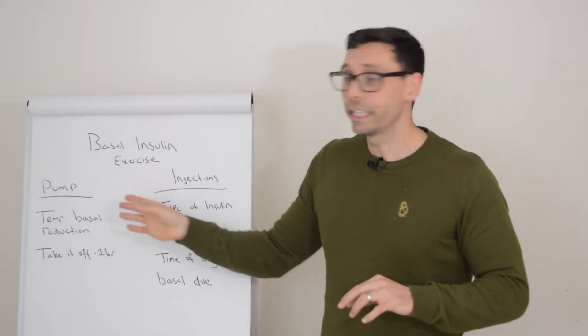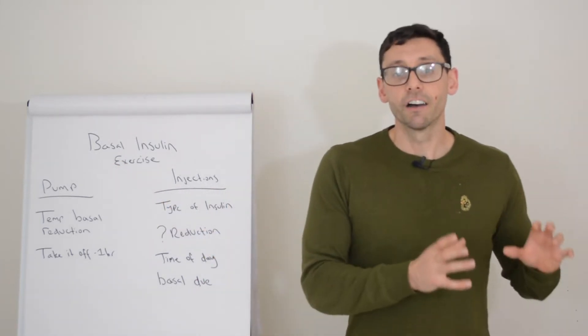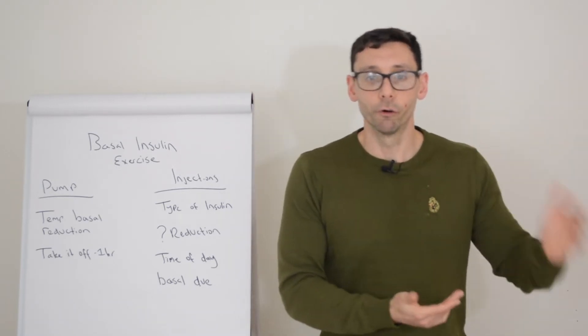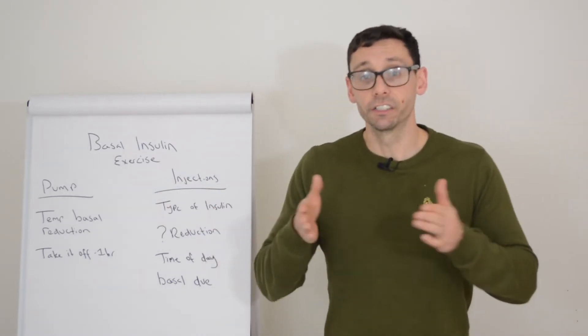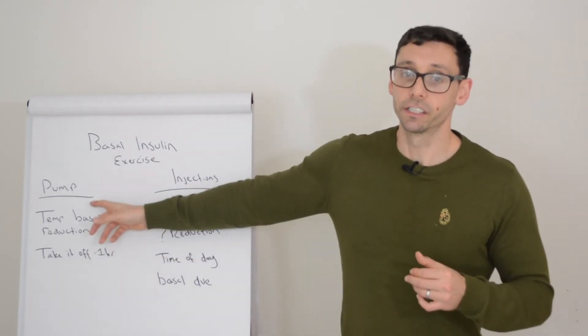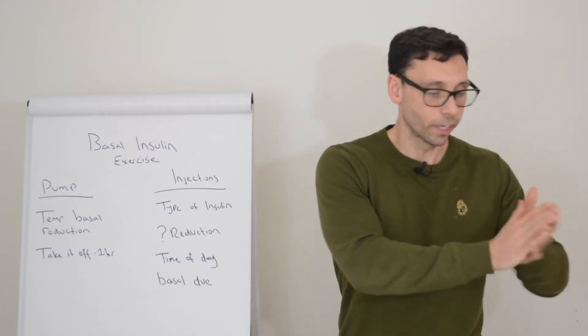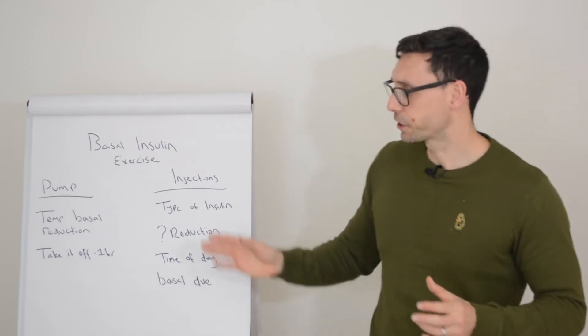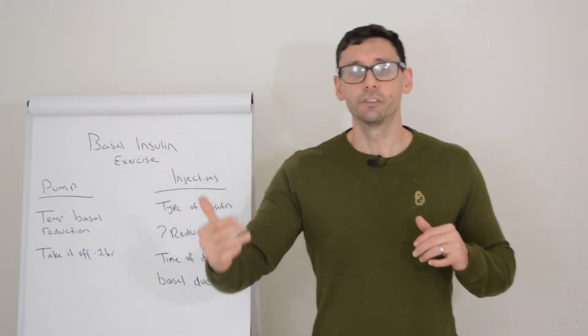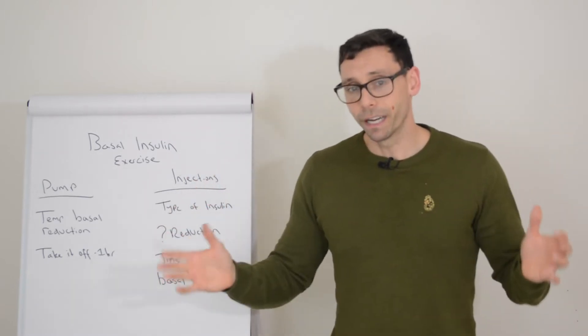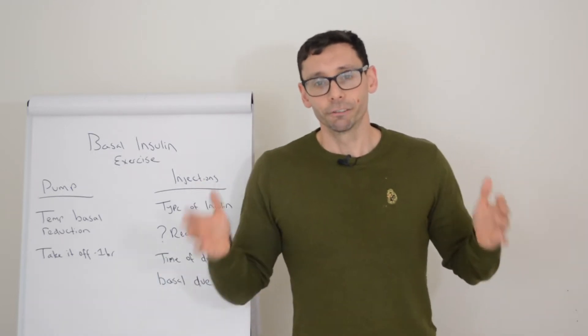What you can do is you can set a temporary basal rate for your pump about an hour to an hour and a half before you commence the session, because we always act before we're going to do something in diabetes rather than waiting until you start, because then it will take a little bit of time for that reduction to kick in. So we want to give it time to kick in ideally aligning it just nicely with the start of the session. So about an hour to an hour and a half beforehand you set a temporary basal reduction somewhere in the region, this is quite a big bandwidth to be fair, somewhere between 20 and 80 percent.